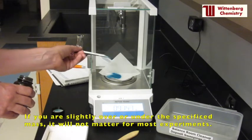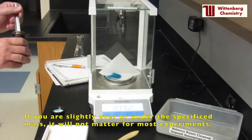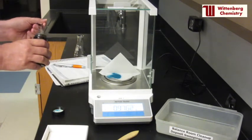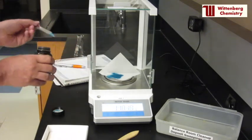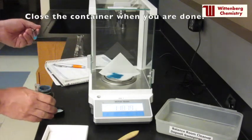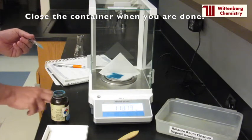For most experiments, you do not need the exact mass written in the laboratory manual. It is okay to be slightly under or over the listed amount. Close the reagent bottle when you are done weighing your chemical.